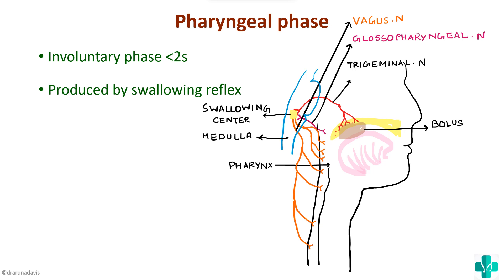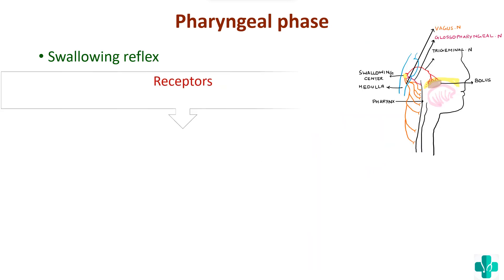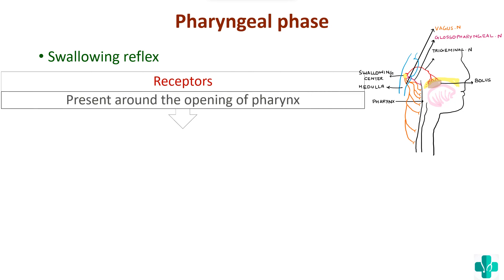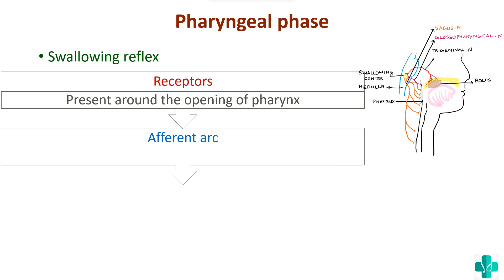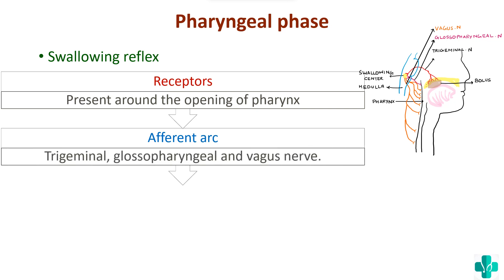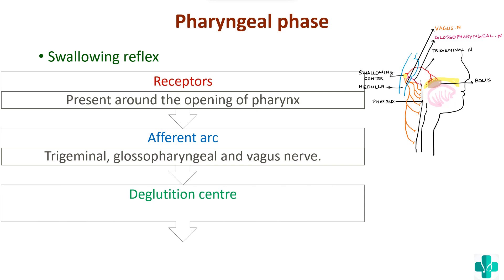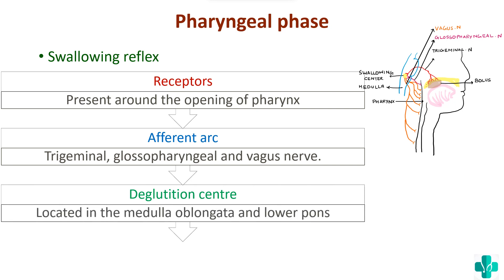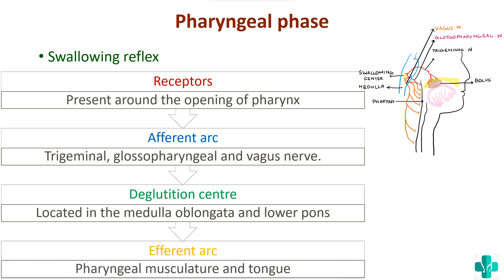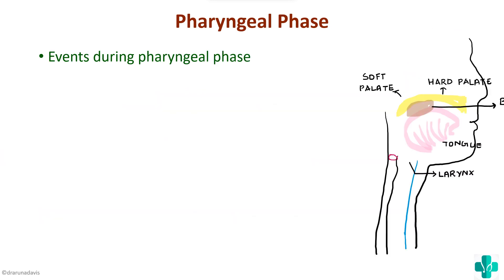The receptors present are mechanoreceptors around the opening of the pharynx. The afferent arc consists of three nerves — trigeminal, glossopharyngeal, and vagus. These reach the deglutition centre located in the medulla and lower pons. The efferent arc consists of nerves activating the pharyngeal musculature and tongue. When these efferent impulses reach the musculature, specific events occur — these constitute the events during the pharyngeal phase.